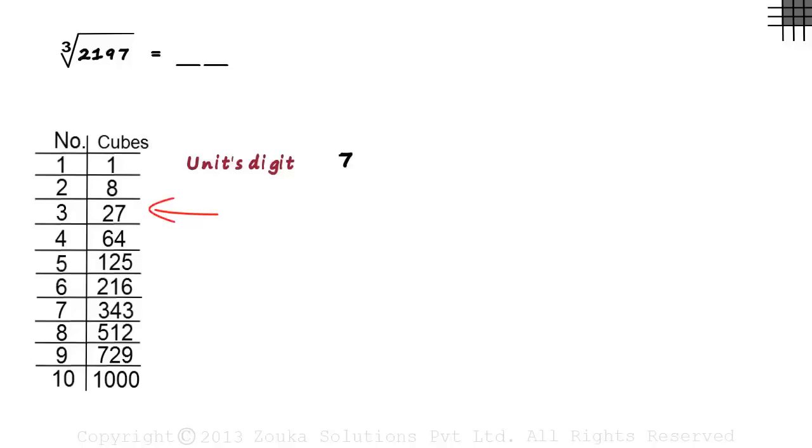It's this one, 27. So we take the number from the first column corresponding to it and write it in the units place of the answer. The number corresponding to 27 is 3.